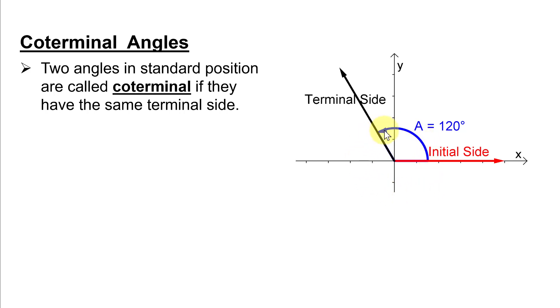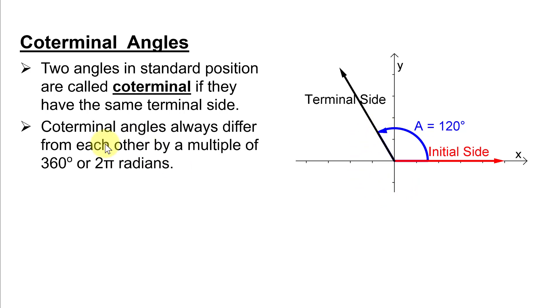So what this means is that coterminal angles will always differ from each other by a multiple of 360 degrees if your angle is in degrees or 2π radians if your angle is in radians. And every angle has an infinite number of coterminal angles because we can keep adding 360 or we can keep subtracting 360.